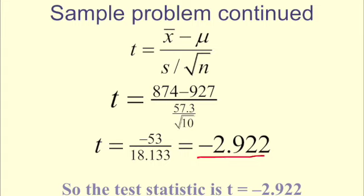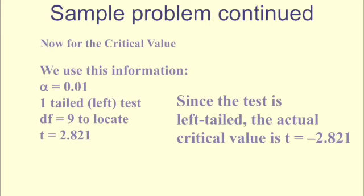So we go to our test statistic, and we know that this is a one-tailed test. And we know this is one-tailed because our alternate hypothesis was that our mean is less than 927. That right there tells me it's one-tailed. So we use the information that it's one-tailed, that our alpha is 0.01, and our degrees of freedom is 9. We got that because degrees of freedom is n minus 1, and our sample size was 10, so that gives us 9.